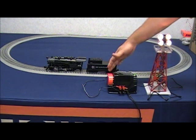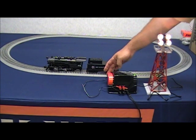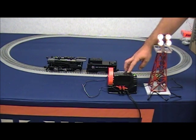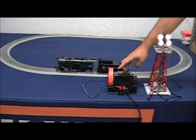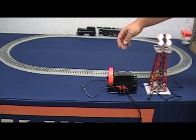Notice the track power is off and the accessory voltage is still on. Once I turn the power back on, pressing direction, whistle or bell has no effect on my accessory output.